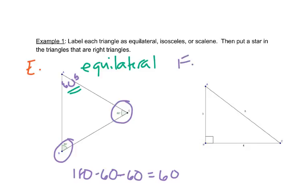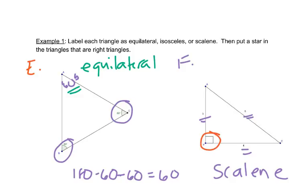And then example F. Here we have 3, here we have 4, here we have 5. That means this is scalene because they're all different. But we have a right angle marked right here so it's a right triangle and we'll put a star inside of it.